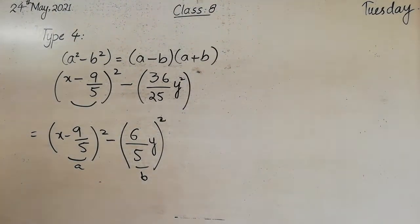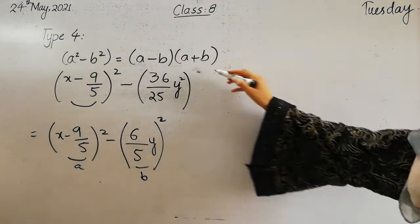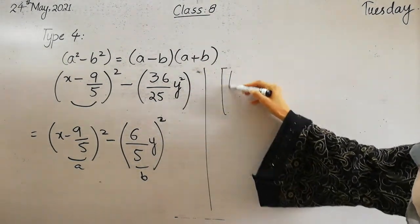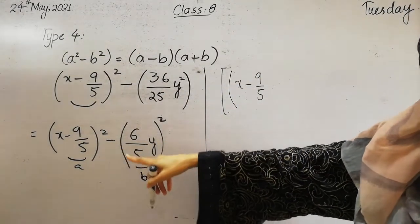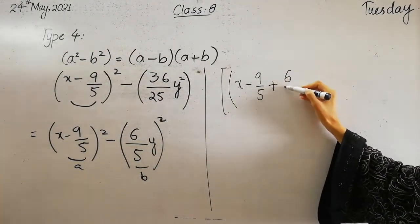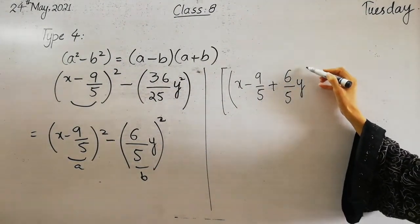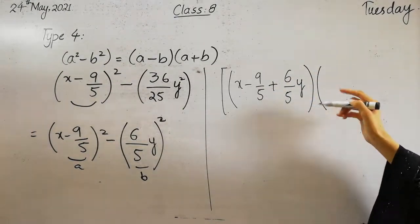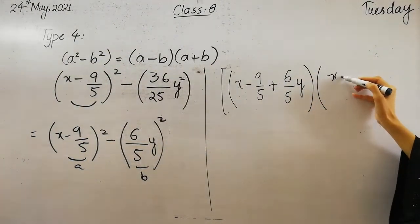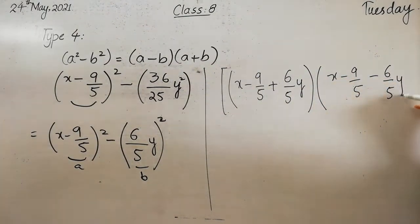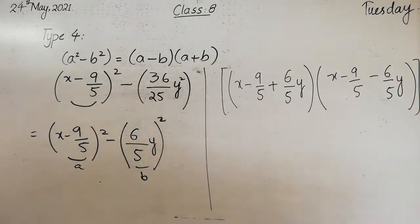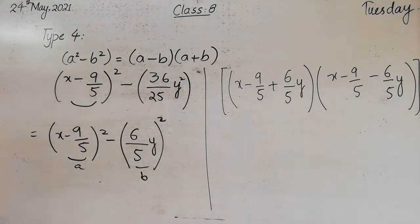What is A? A is x minus 9 by 5. A plus B — what is B? B is 6 by 5 y. So the second term is A minus B. This is the factorization of the given expression.